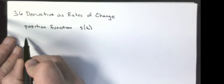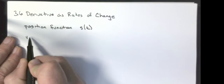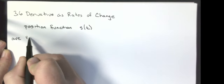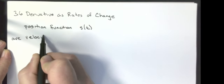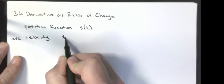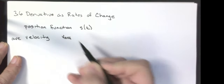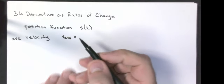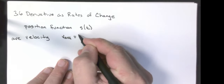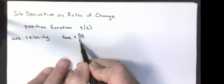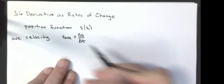The velocity function — the first thing I'm going to do is say that the average velocity is going to be the change of S, the change of position, divided by the change of time. And those are going to be fixed points.